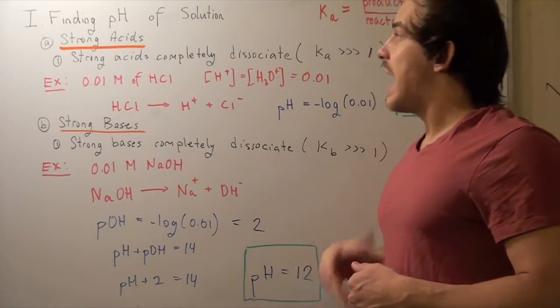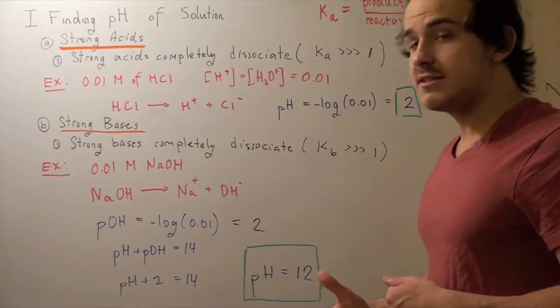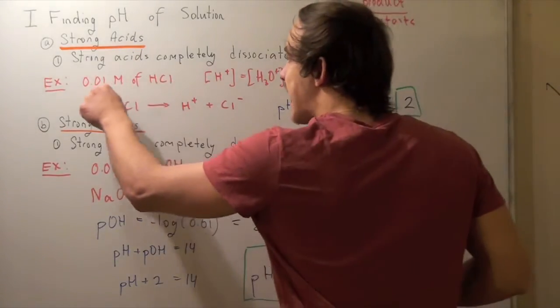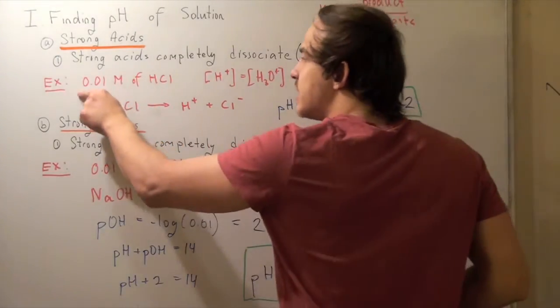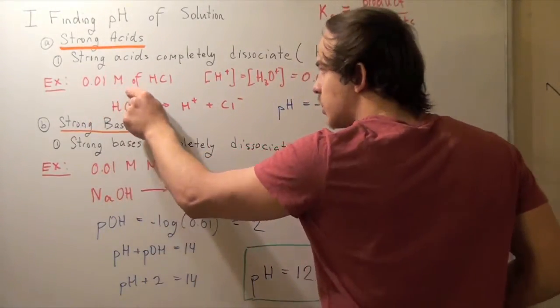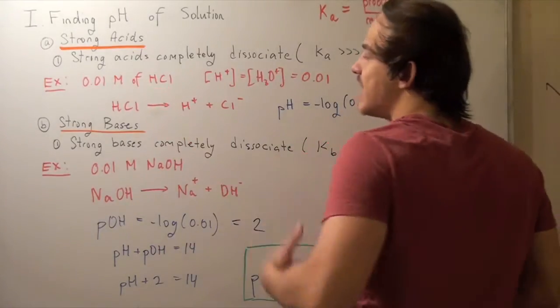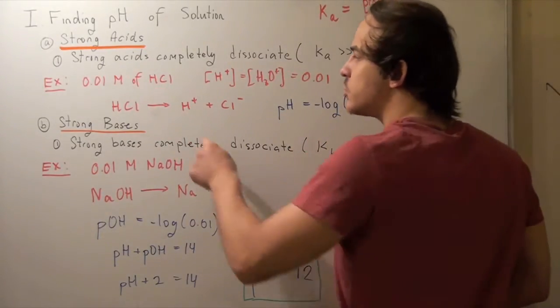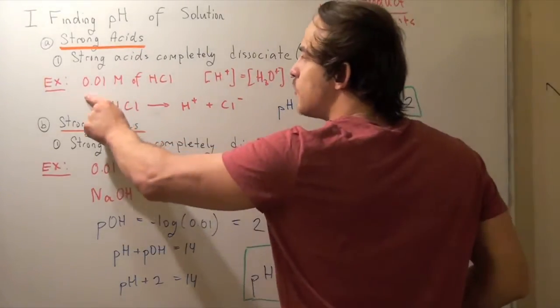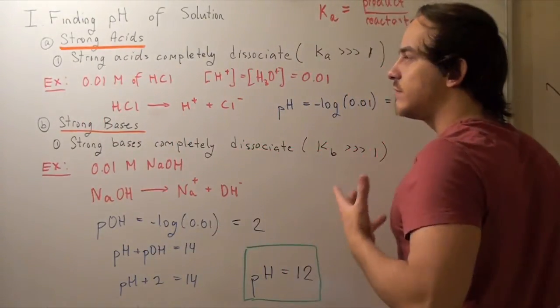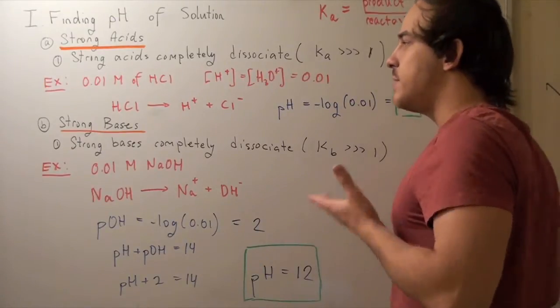So how do we find the pH of strong acids? Well notice that at the end of our reaction, none of the HCl will be left over. So that means this 0.01 molar amount of HCl is completely converted to H+ and Cl-. And exactly 0.01 molar of H+ is left over. So how do I find the pH?